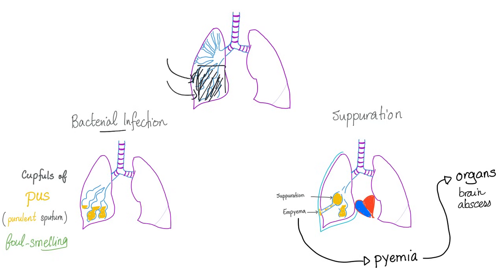Complications — it's usually a bacterial infection, though not always. TB is the most common cause worldwide. In the western world it's cystic fibrosis, but the lung gets infected and you cannot clear those airways. Stagnation creates bacteria. The patient will cough cupfuls of pus, or purulent sputum, which is foul-smelling.